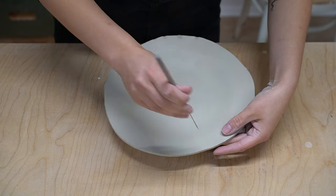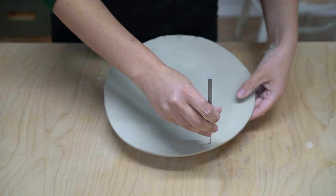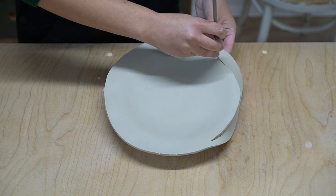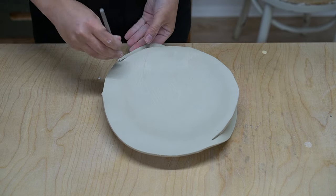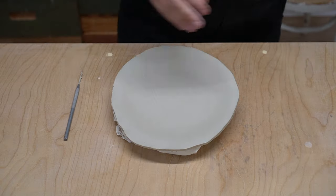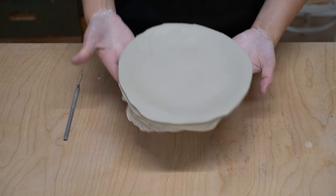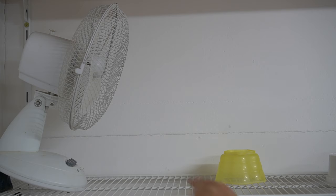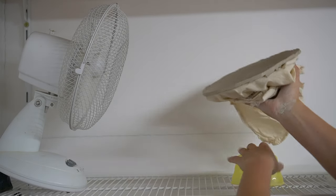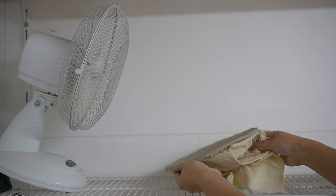And then I'm going to cut the rim twice. So for the first cut I'm just kind of getting rid of the excess clay here. So you don't need to be too precise here. And then you're going to want to wait until your slab becomes leather hard. So here I'm just putting it in front of the fan and I'm going to wait about an hour for it to dry out.